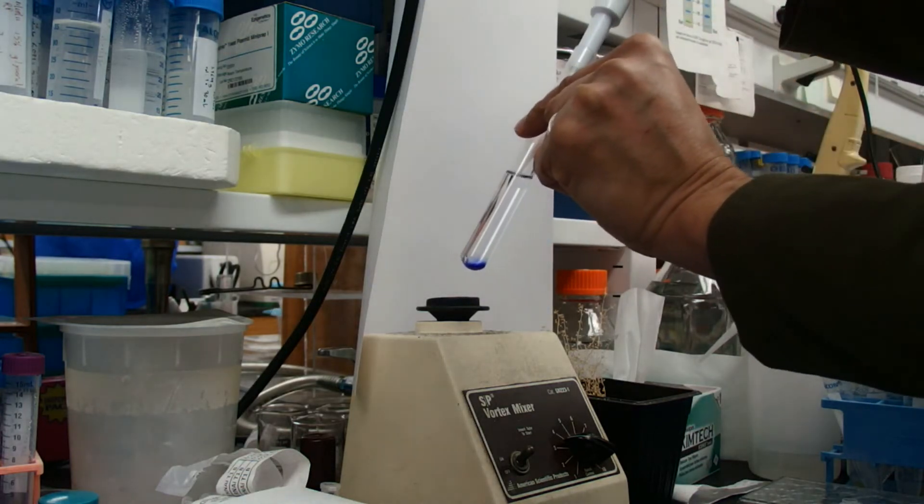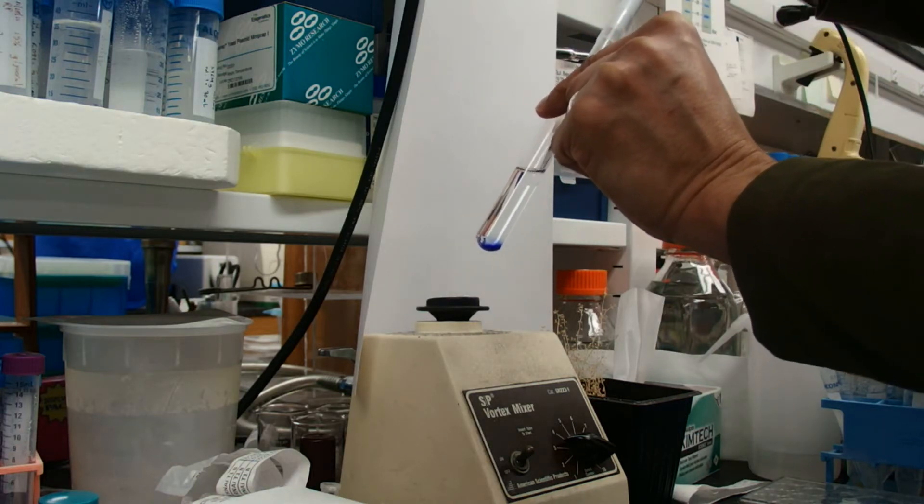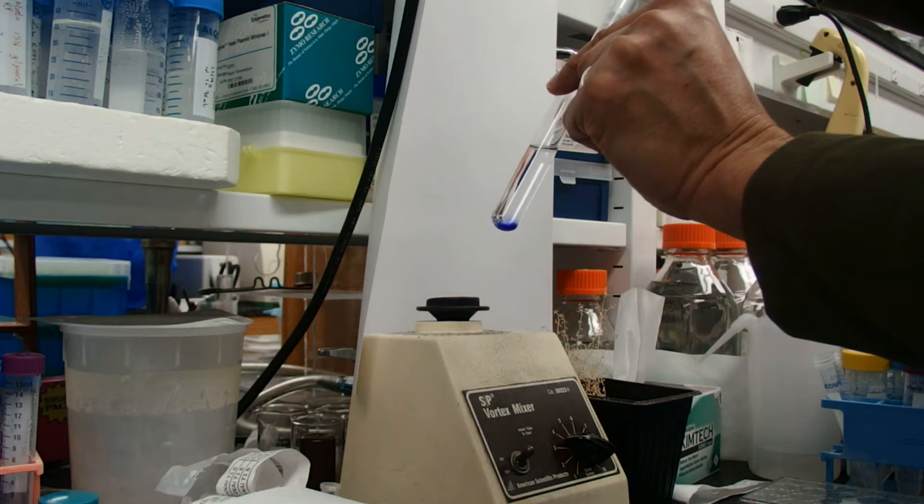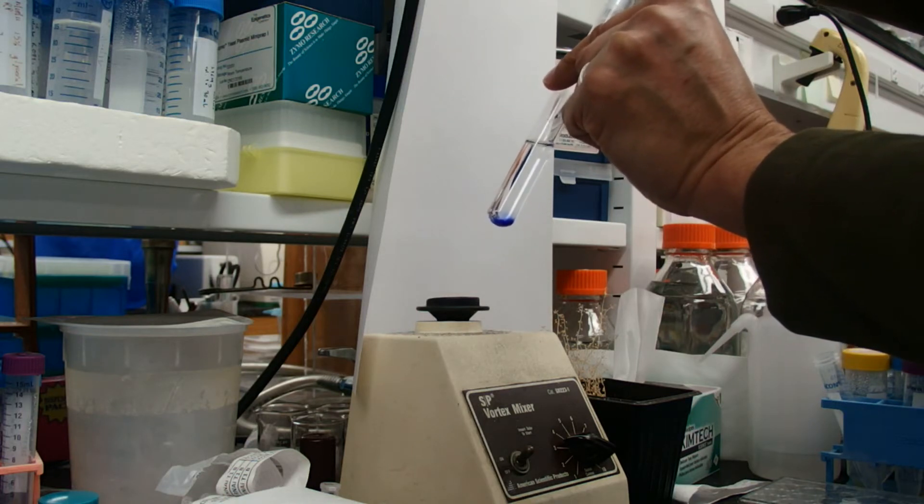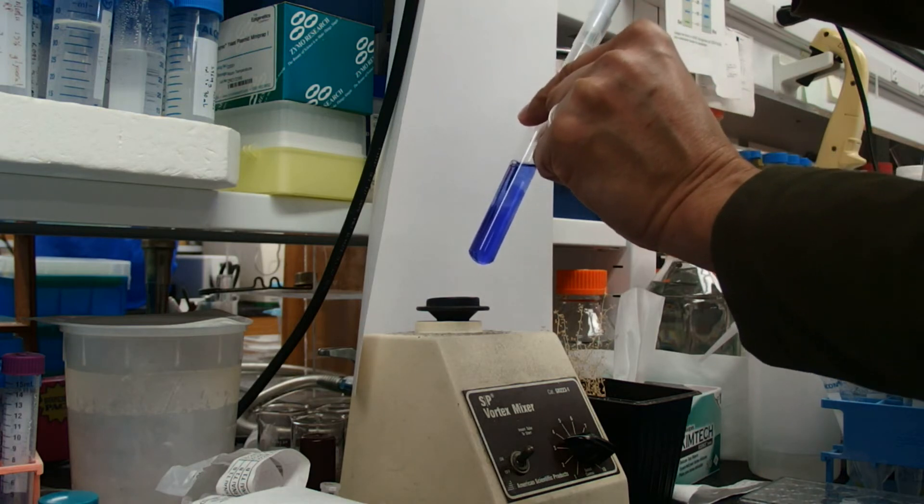To mix by pipetting, we're just going to pipet the liquid in slowly into the pipetter. Bring your pipet a little bit above the liquid and squirt it out hard. You see mixing has happened right there.